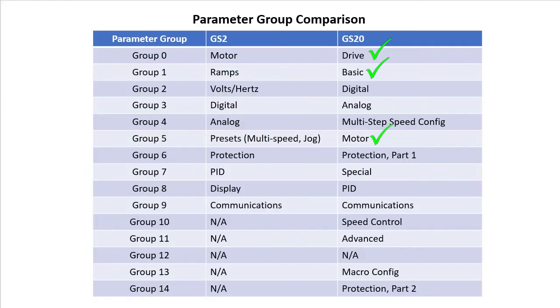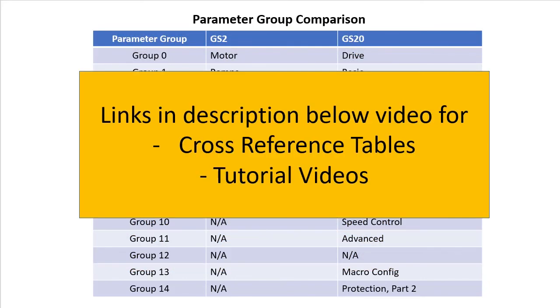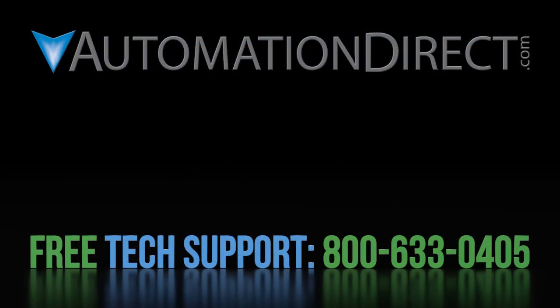That's enough for this video. Take a break, top off your coffee and then join me in the next video where we will continue to skim through the differences between the GS2 and GS20 families of variable frequency drives. Remember, links to the detailed cross-reference documents and lots of video tutorials are in the description below. This was just a quick run-through intended to give you a general idea of what's available — be sure to read the user manual to confirm and fully understand anything covered here. Click here to learn more about the GS20 family of variable frequency drives, click here to subscribe to our YouTube channel, and click here to learn about AutomationDirect's free award-winning support options.